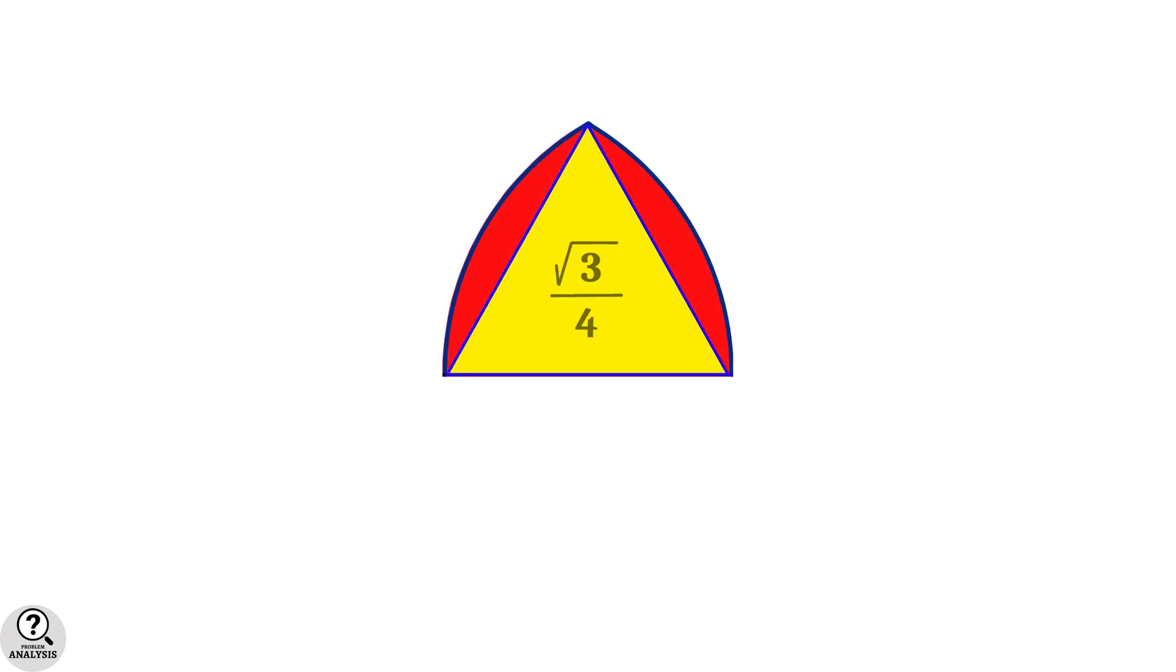Now we have to find the area of this red shaded region. Due to the symmetry, these two pieces are identical. So, it is enough to find the area of one piece and multiply by 2. But how to find that?